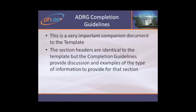Having a simple answer to an important question helps orient the reviewer to what they can expect when they open up a data set. Many of the sections are expandable past these required questions and allow the sponsor to put in whatever information they feel is important for that section. The completion guidelines is the second document and is actually a very important companion document to the template. The section headers are identical, but the completion guidelines provide discussion and examples of the type of information to provide for each section. The template itself is only seven pages long, but the completion guidelines is 27 pages long.